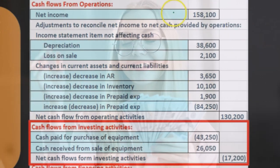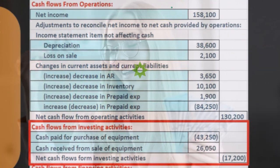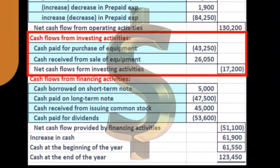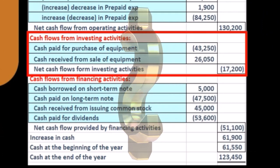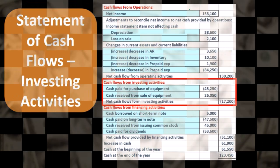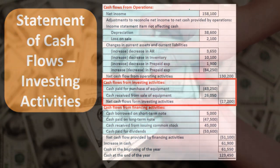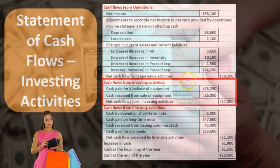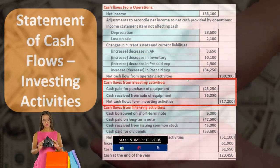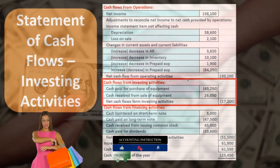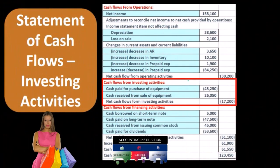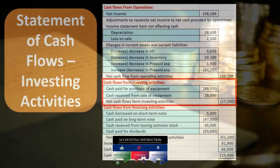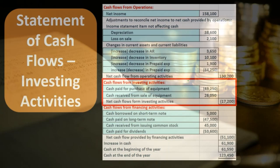We know that property, plant, and equipment purchases are not going to be in operating activities. The normal journal entry when we purchase equipment does not involve an income statement account — it's recorded as an asset, and we pay cash or take out a loan. We don't have any revenue or expenses involved, so it's not going to be in operating. It has to be somewhere in investing or financing, and we put it in investing because it is an investment into the future, even though it's recorded on the balance sheet under assets. Pretty much all assets are a type of investment — that's why we have them, in order to help us generate revenue in the future.